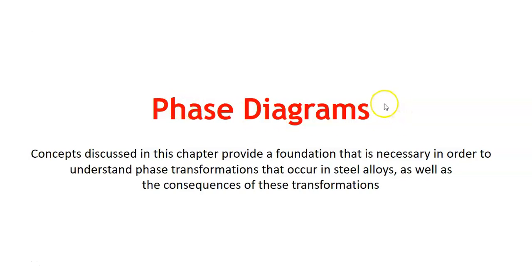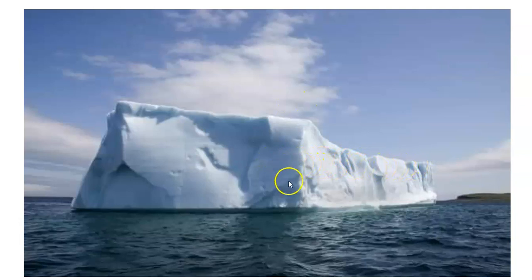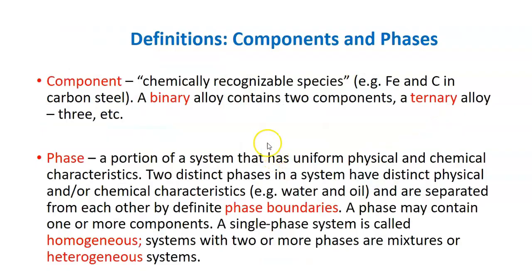We're going to discuss a new chapter which we call phase diagrams. When you see this picture, you can see three different phases of the water system: the iceberg, the water or ocean or sea, and the vapor which is the cloud. These phases can be represented in a diagram, and this diagram is what we call a phase diagram.